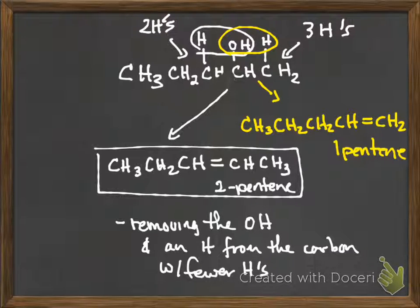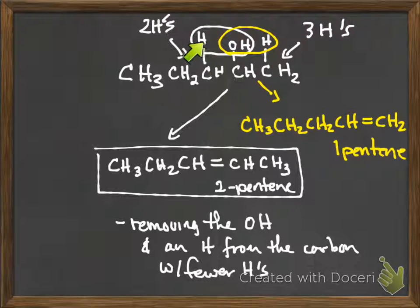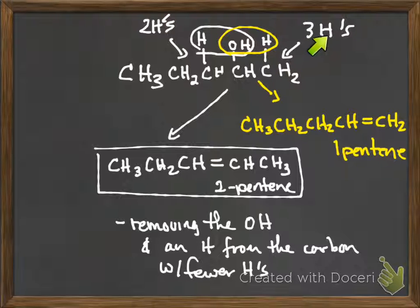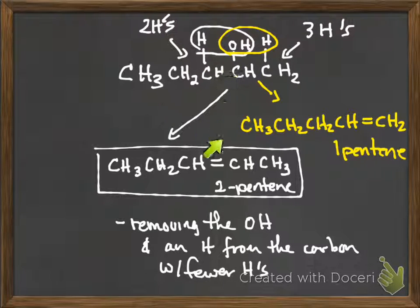Zaitsev said: if you're going to make a double bond, the OH has to go, and you have to take an H from a neighboring carbon. There's a hydrogen on this side and a hydrogen on that side. What he found was it always comes from the side with the fewest hydrogens. There are two hydrogens on one side and three on the other — so the double bond forms by taking the H from the left side and removing the OH group.